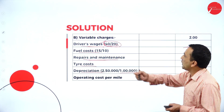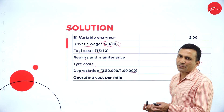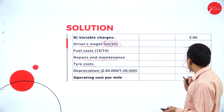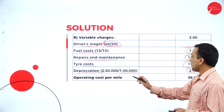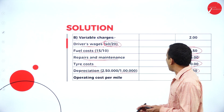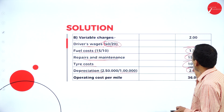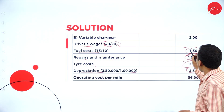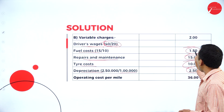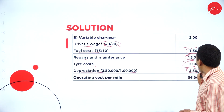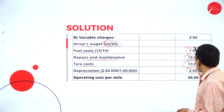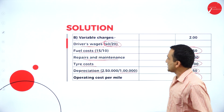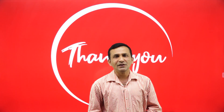Taking the total of fixed cost and variable cost together, you will get the total cost per mile. Fixed cost per mile is 5. Variable costs: 2 + 1.50 + 15 + 10 + 2.50. Adding all together: 5 + 2 + 1.50 + 15 + 10 + 2.50, total cost per mile is 36 rupees. Keep watching for the next session. Thank you.